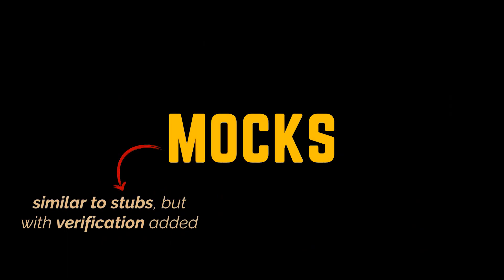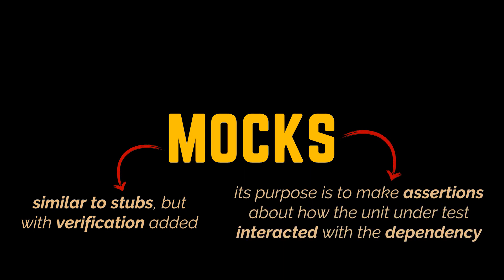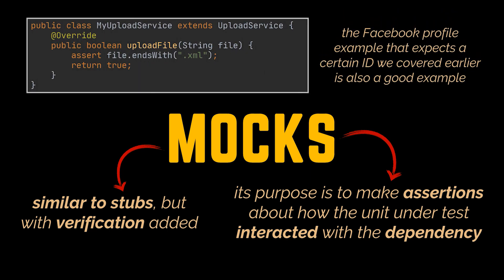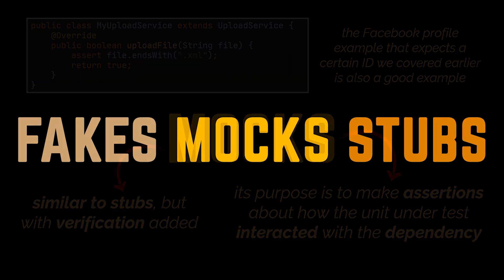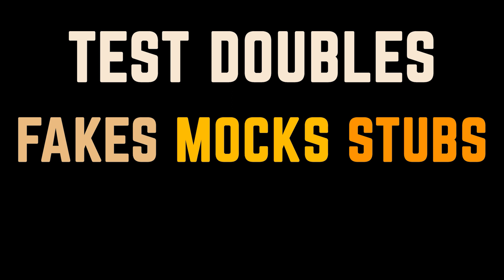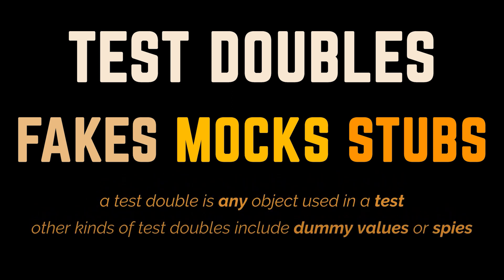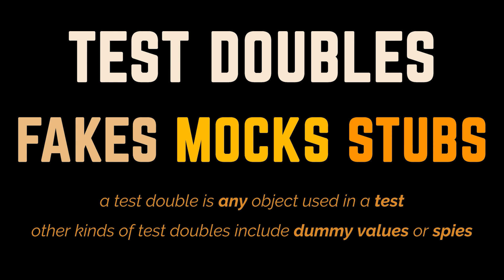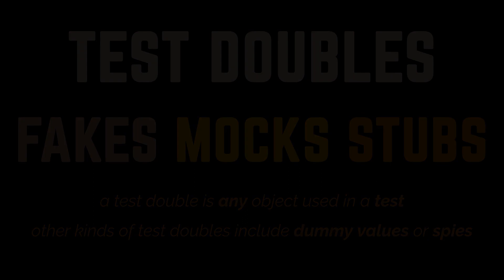Mocks are similar to stubs but with verification added in. The purpose of a mock is to make assertions about how the unit under test interacted with the dependency. For example, if writing a test for a system that uploads files to a website, we could build a mock that accepts a file and asserts that the given file was correct — it won't actually upload the file, just like stubs, but will return the desired results only if the assertions pass. Fakes, stubs, and mocks all belong to what we call test doubles — any object used in a test to help test our unit.